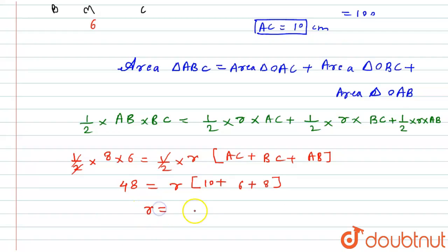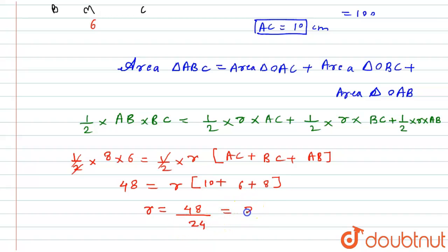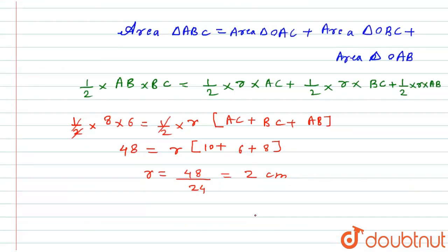So the value of R equals 48 divided by (10 + 6 + 8) = 48 divided by 24, which gives R = 2 centimeters. So the radius of the inscribed circle is 2 centimeters. I hope you liked the solution, thank you.